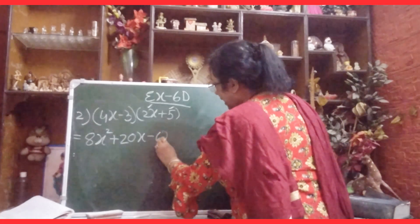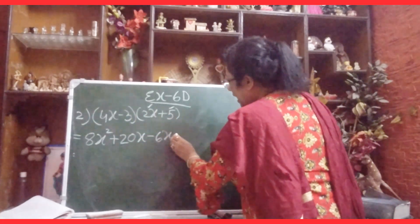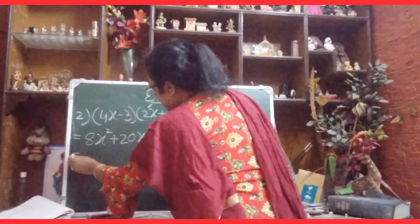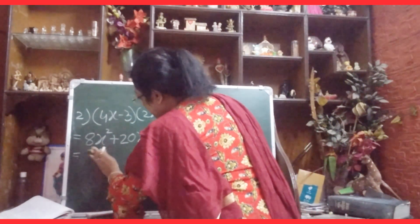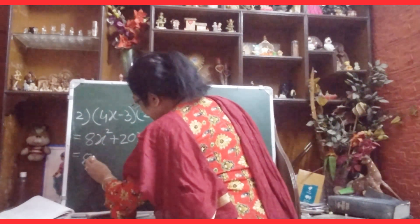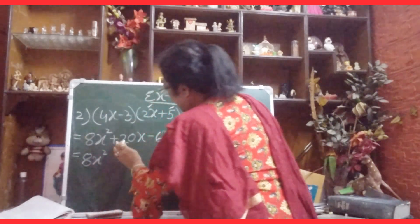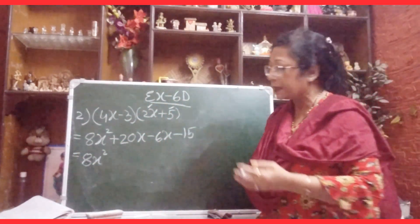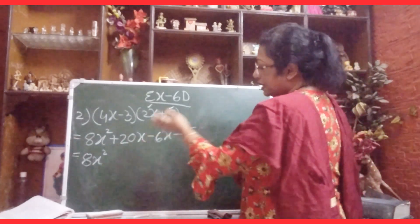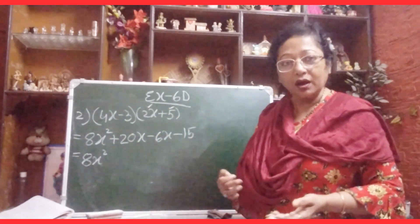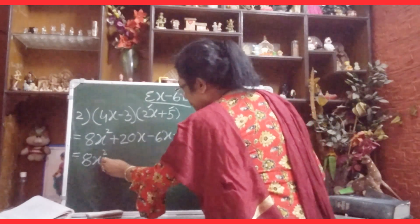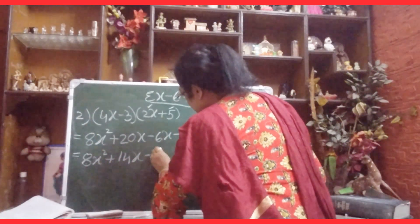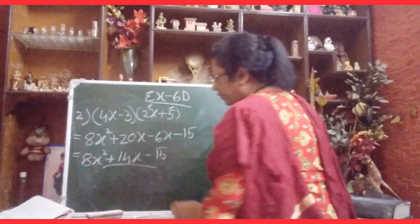Then minus 3 times 5 gives minus 15. Now combining like terms: 20x minus 6x — since 20 is the bigger number, we take the plus sign — giving plus 14x. So the answer is 8x squared plus 14x minus 15.